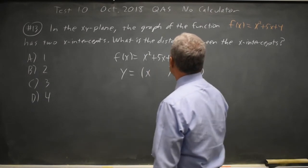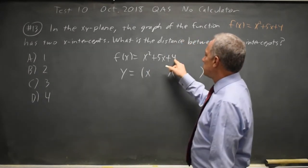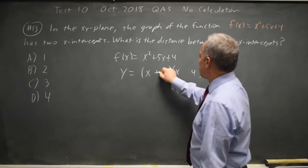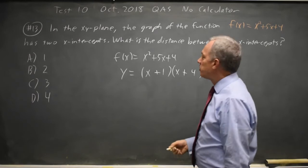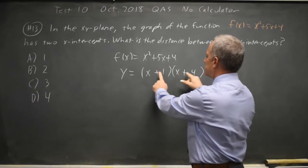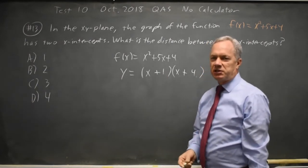I have x and x. I need two numbers whose product is 4 and their sum is 5, so that would be 1 and 4, and they're both plus. If I check with FOIL, I get x squared plus 4x plus another x is plus 5x plus 1, so that is the correct factorization.